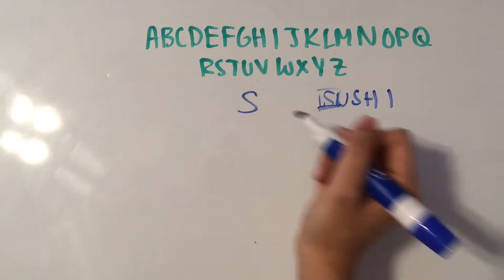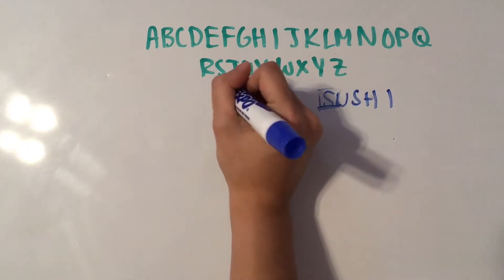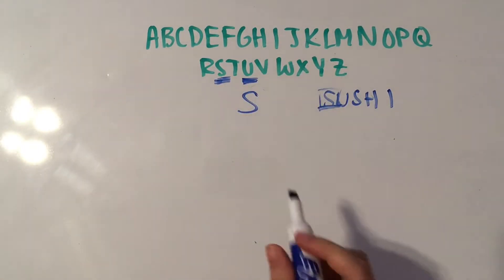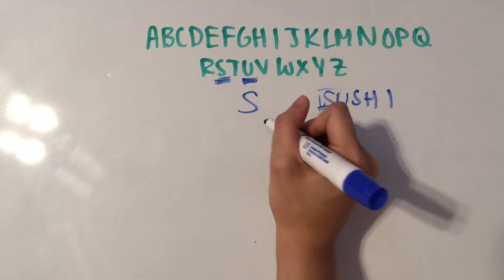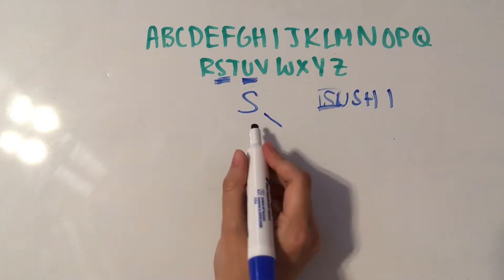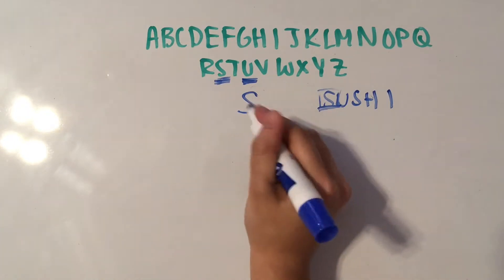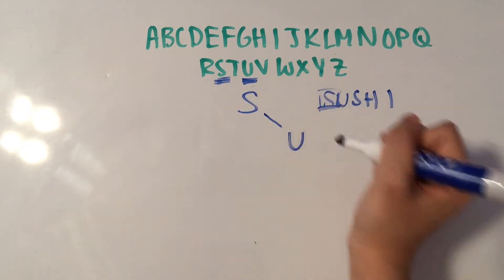So our first letter is S, our next letter is U. So S is here and U is here. So since U is after S in the alphabet, we're going to draw a branch to the right of S, and then put in the next letter.